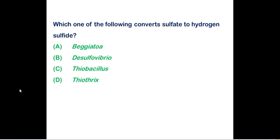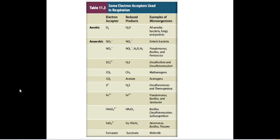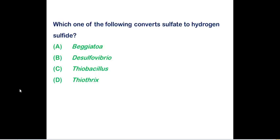Which of the following converts sulfate to hydrogen sulfide? The correct answer is option B, Desulfovibrio. Both Desulfovibrio and Desulfomaculum are responsible for converting sulfate to hydrogen sulfide, whereas the rest of the three microorganisms are involved in oxidizing sulfur compounds to sulfate.